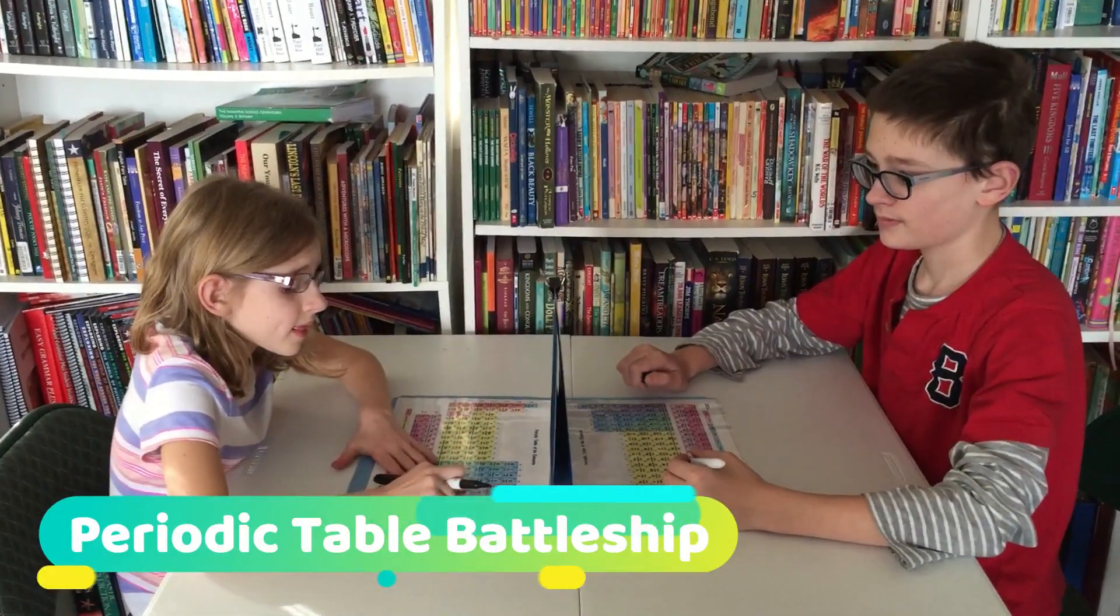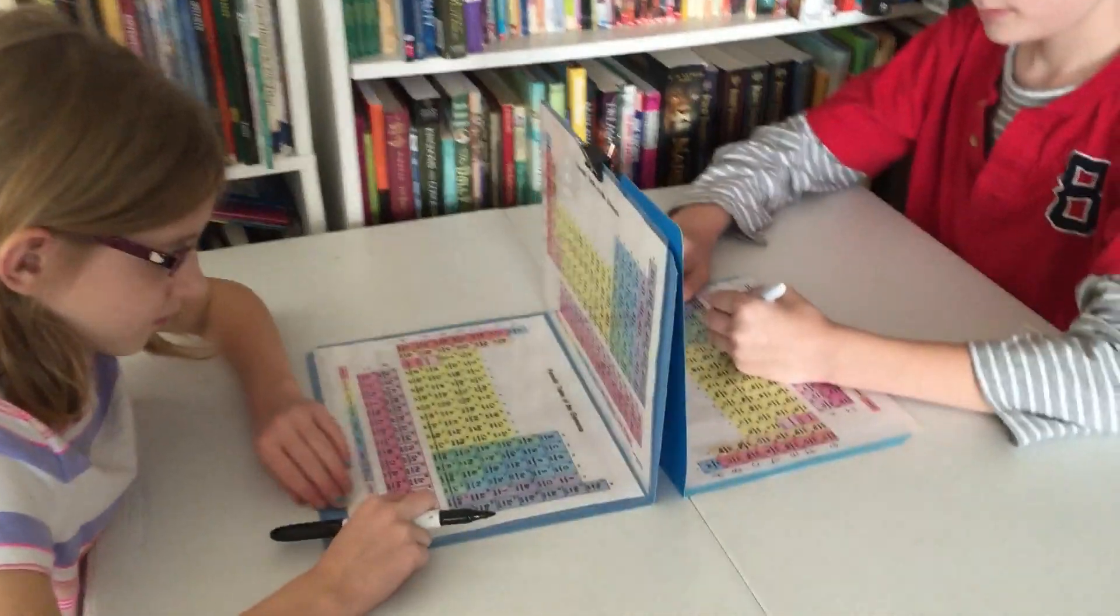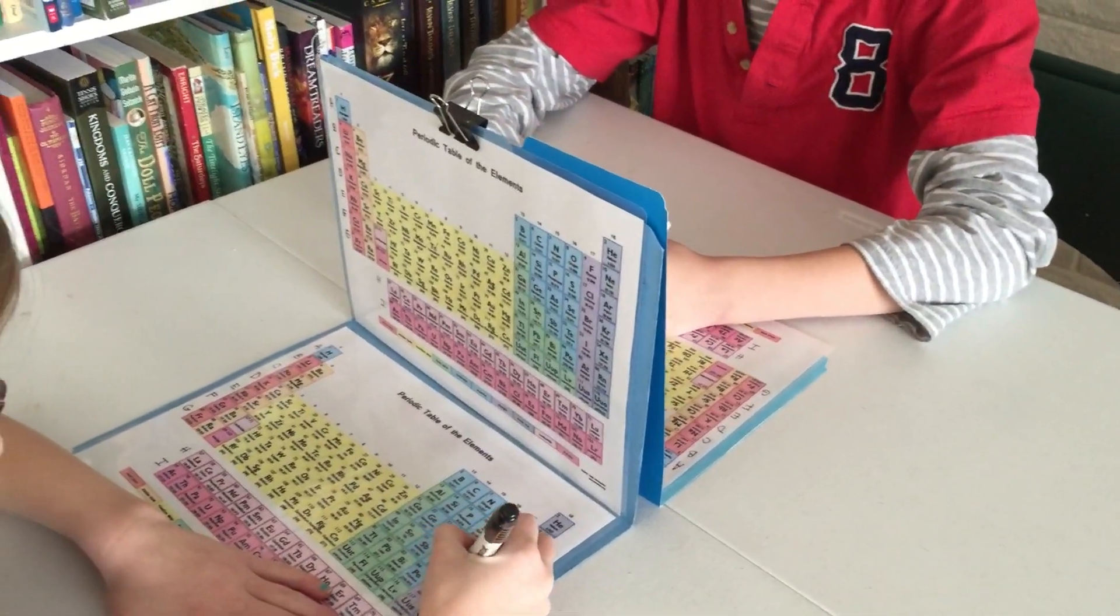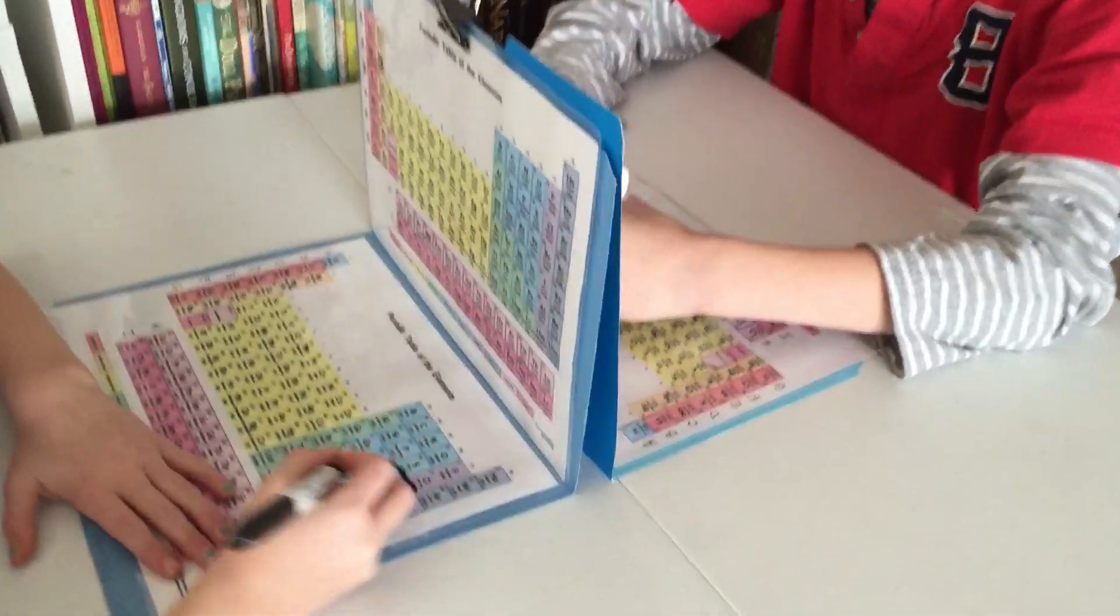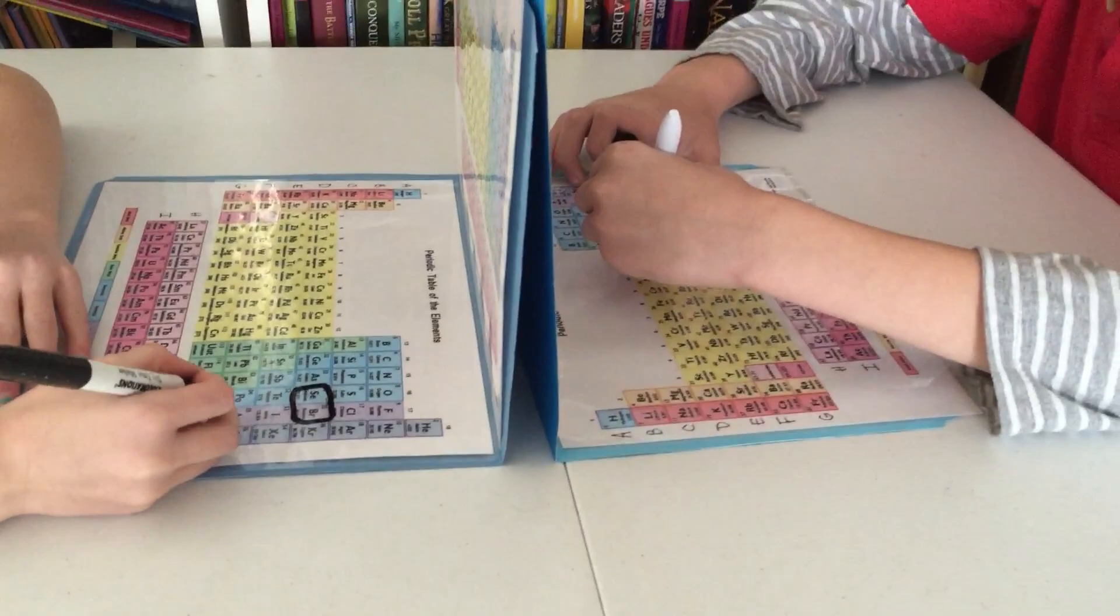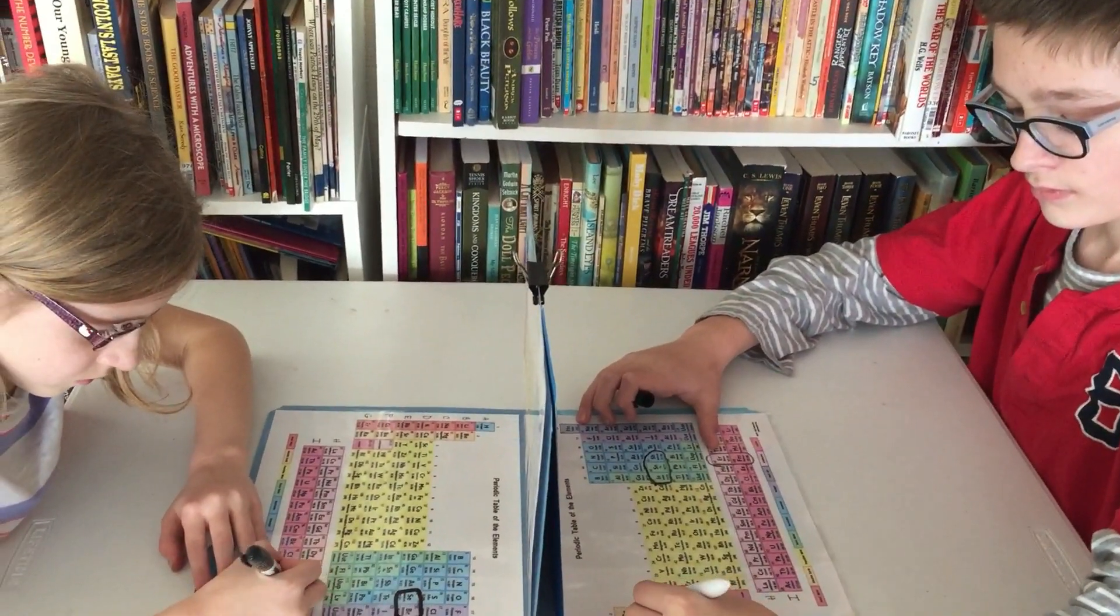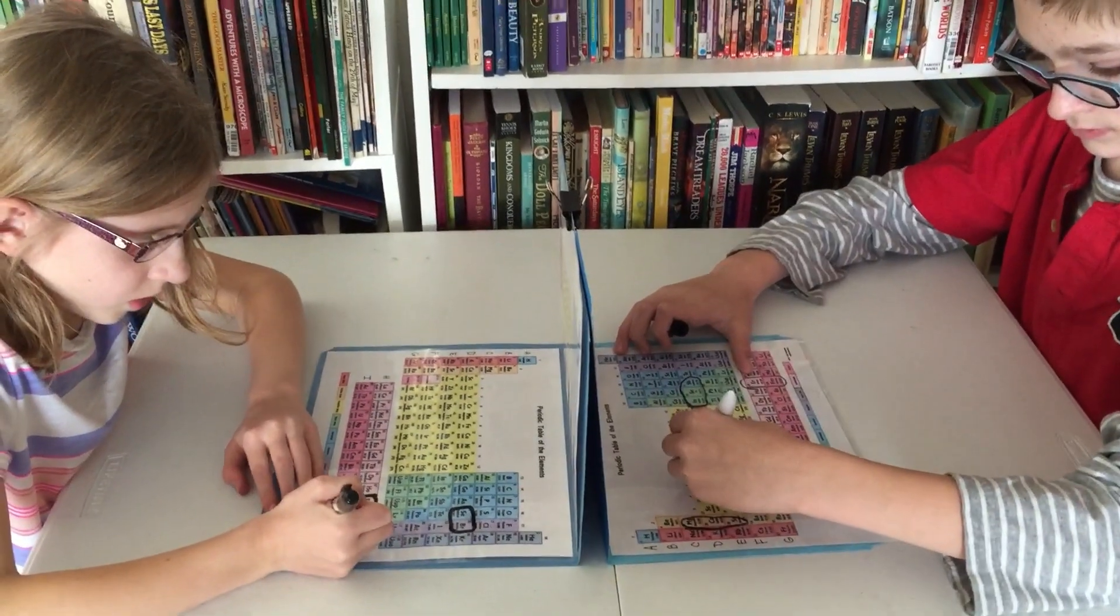Okay, so we are playing Periodic Table Battleship. What we've done is we've taken four copies of a printable periodic table and put them inside of two colored folders and just clipped them together at the top. If you spread them out a little at the bottom, then they'll stand up while they're playing. Right now the kids are using dry erase markers on laminated copies so that they are reusable.